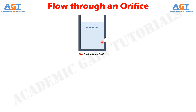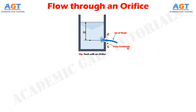Let's consider a tank fitted with a circular orifice in one of its sides as shown in this figure. Let H be the head of the liquid above the center of the orifice. The liquid flowing through the orifice forms a jet of liquid whose area of cross-section is less than that of the orifice. The area of the jet of fluid goes on decreasing and at a section CC, the area is minimum. This section is approximately at a distance of half of the diameter of the orifice. At this section, the streamlines are straight and parallel to each other and perpendicular to the plane of the orifice. This section is called vena contracta. Beyond this section, the jet diverges and is attracted in the downward direction by gravity.